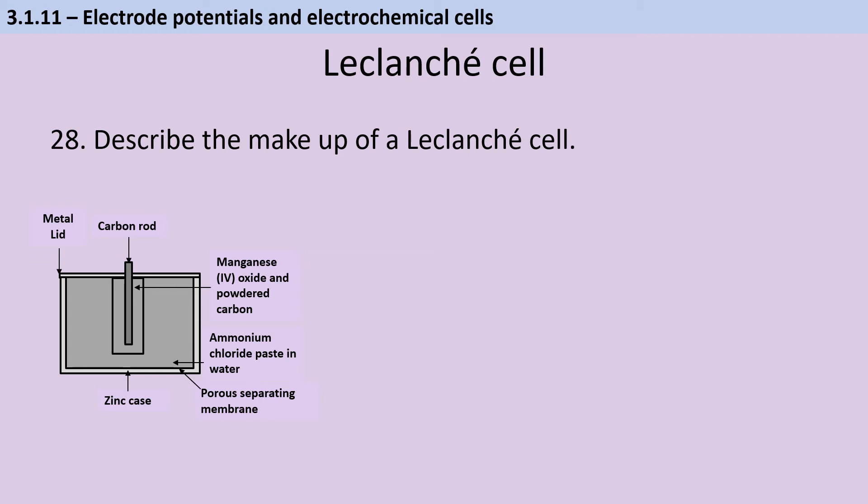Then we've got our Leclanché cell. So this is your sort of standard zinc ammonium chloride cell where if you go and buy a cheap pack of batteries from the supermarket, this is what you're getting. So around the outside of this cell, we have a zinc case and that's functioning as the anode. So over time, oxidation is going to happen. That zinc loses electrons, forms zinc ions. And that's why if you run this battery for long enough, then eventually the zinc casing just wears away and ammonium chloride leaks out, which is really bad because it's really corrosive.